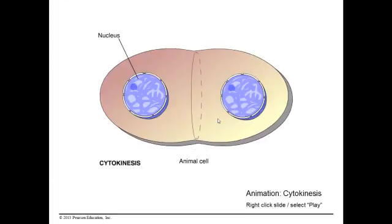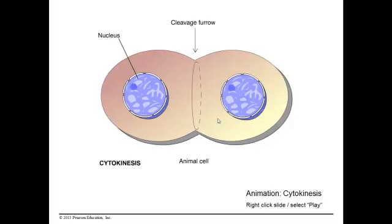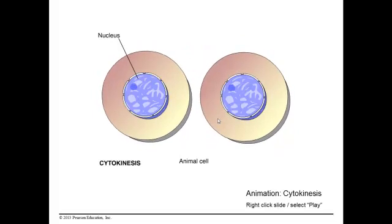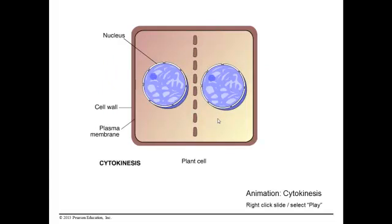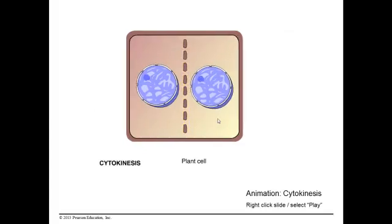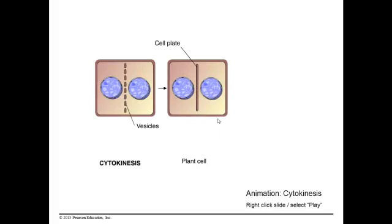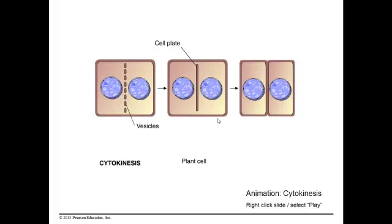Cytokinesis is where one cell finally becomes two based on the cleavage furrow. In animal cells, cytokinesis begins with the formation of a cleavage furrow — a ring of microfilaments contracts, much like the pulling of drawstrings, and the cell is pinched into two, creating two identical daughter cells. In plant cells, cytokinesis begins when vesicles containing cell wall material collect in the middle of the cell. The vesicles fuse, forming a large sac called the cell plate, which grows outward until its membrane fuses with the plasma membrane, separating the two daughter cells.